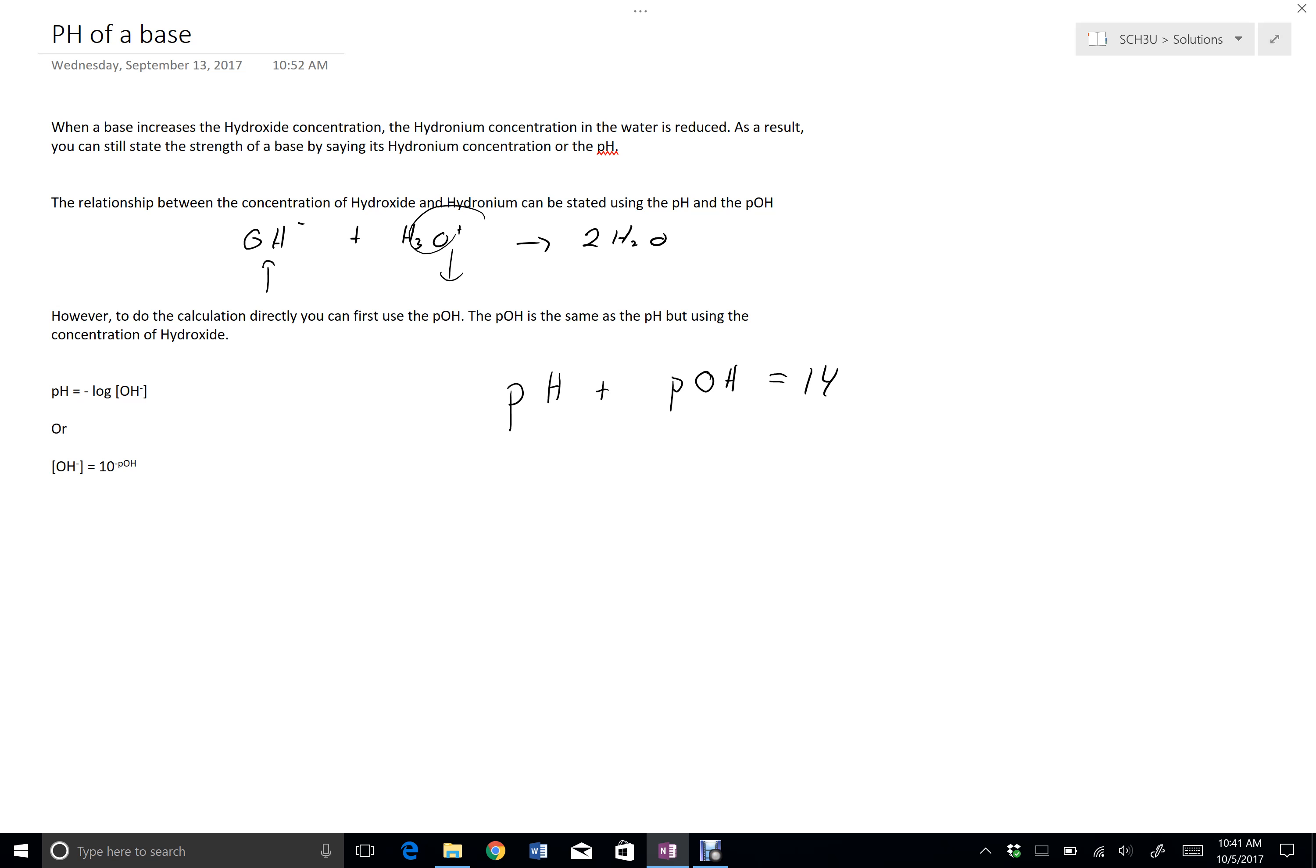At any rate, we should view pOH as the same thing as pH, so it's the negative log of the hydroxide concentration, or we can get the hydroxide concentration by doing 10 to the negative pOH. You're just going to have to trust me on that relationship for right now.